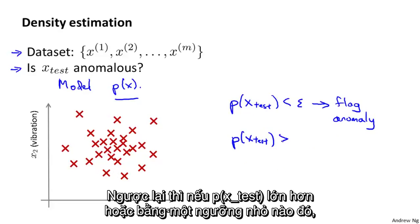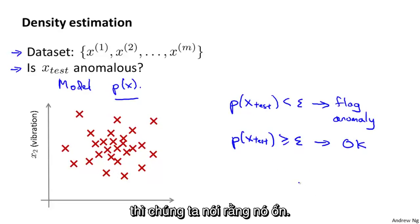Whereas if P of X test is, say, greater than or equal to some small threshold, then we say that it looks okay.